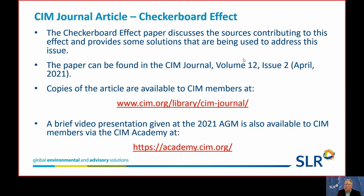The paper goes into some detail as to the sources contributing to this effect, and also provides some solutions that are being used by our colleagues in the industry to address this issue. The paper can be found in the CIM Journal — it came out in April 2021, Volume 12, Issue 2. The paper is available to CIM members at the link CIM.org/library/CIM-Journal.